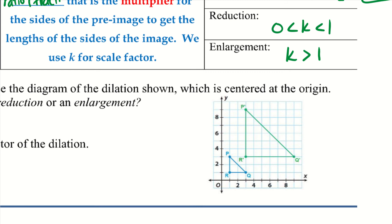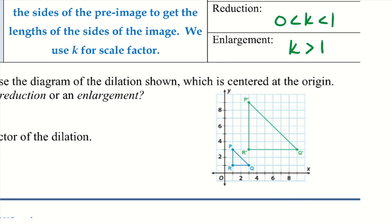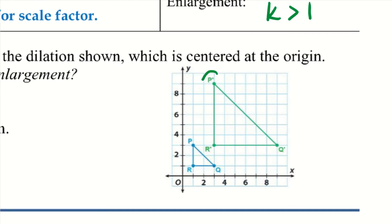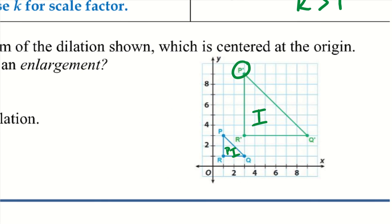Let's try examples 1 and 2. Question 1: is this dilation a reduction or an enlargement? I start by finding which triangle has the prime marks — the green triangle does, so it's the image. I need to decide if the image is larger or smaller. Since it is larger, this is an enlargement, because the pre-image is smaller than the image.